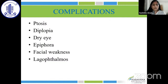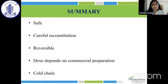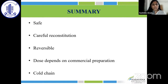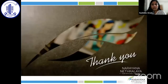Complications include ptosis, diplopia, dry eye, epiphora, facial weakness, and lagophthalmos — hence the importance of knowing where not to inject. In summary, botulinum neurotoxin is safe, needs to be reconstituted carefully, its action is reversible, and its complications are also reversible. The dose depends on the commercial preparation, and cold chain must be maintained to preserve the efficacy of botulinum toxin.